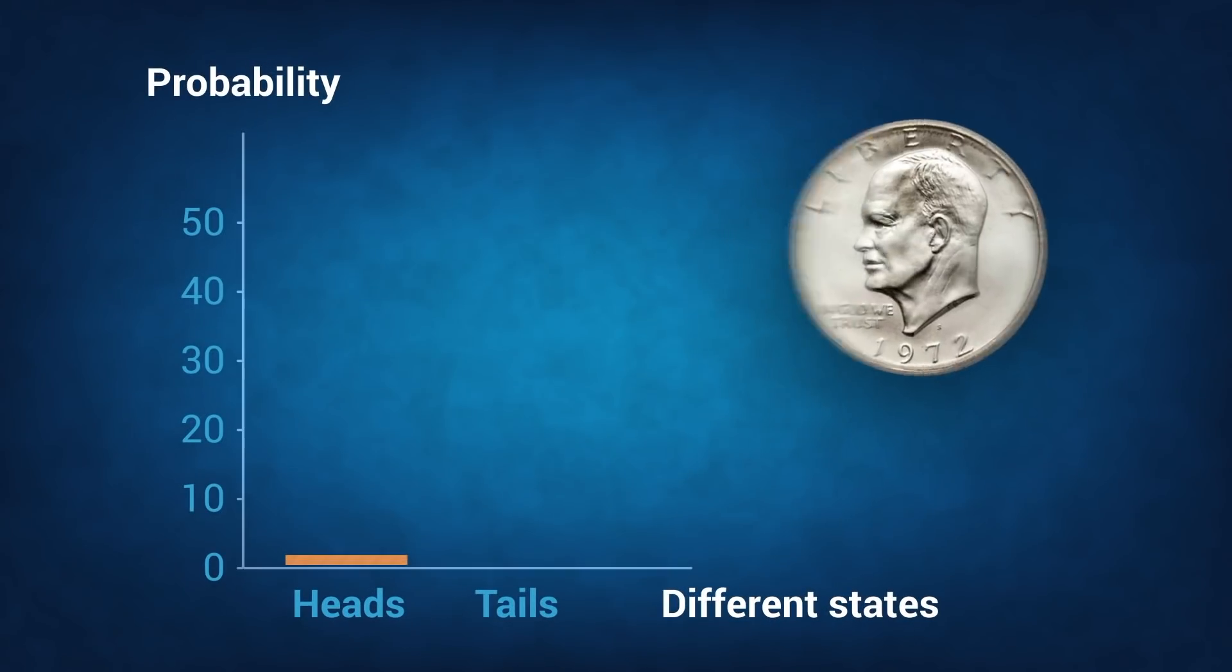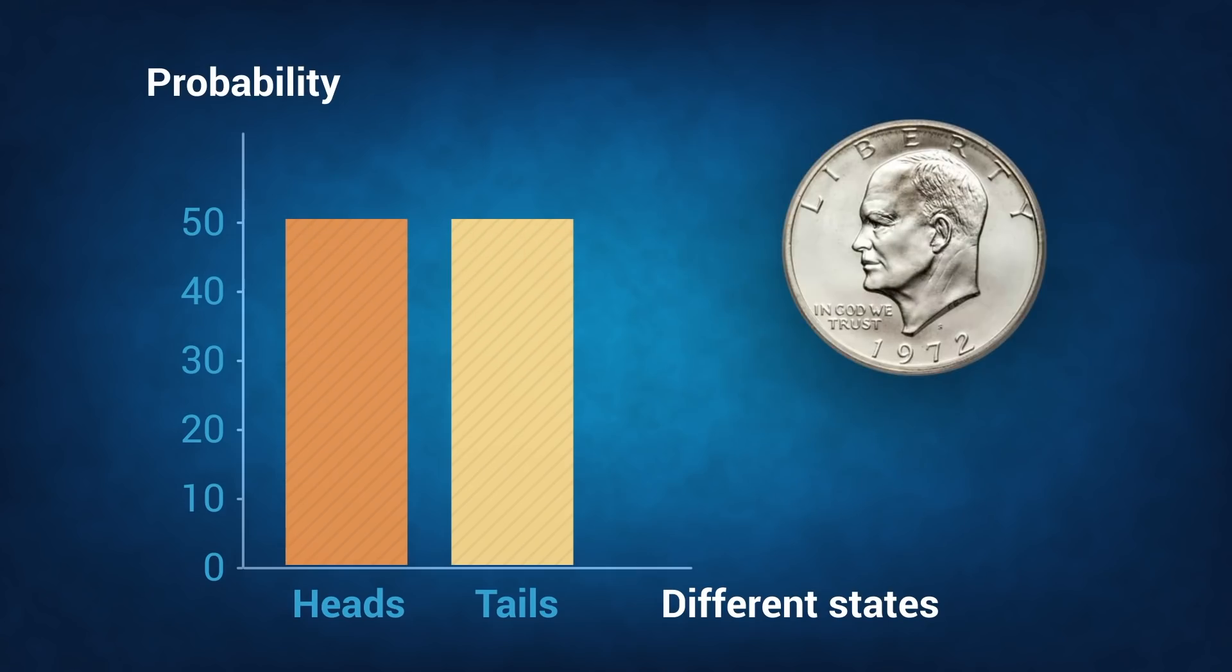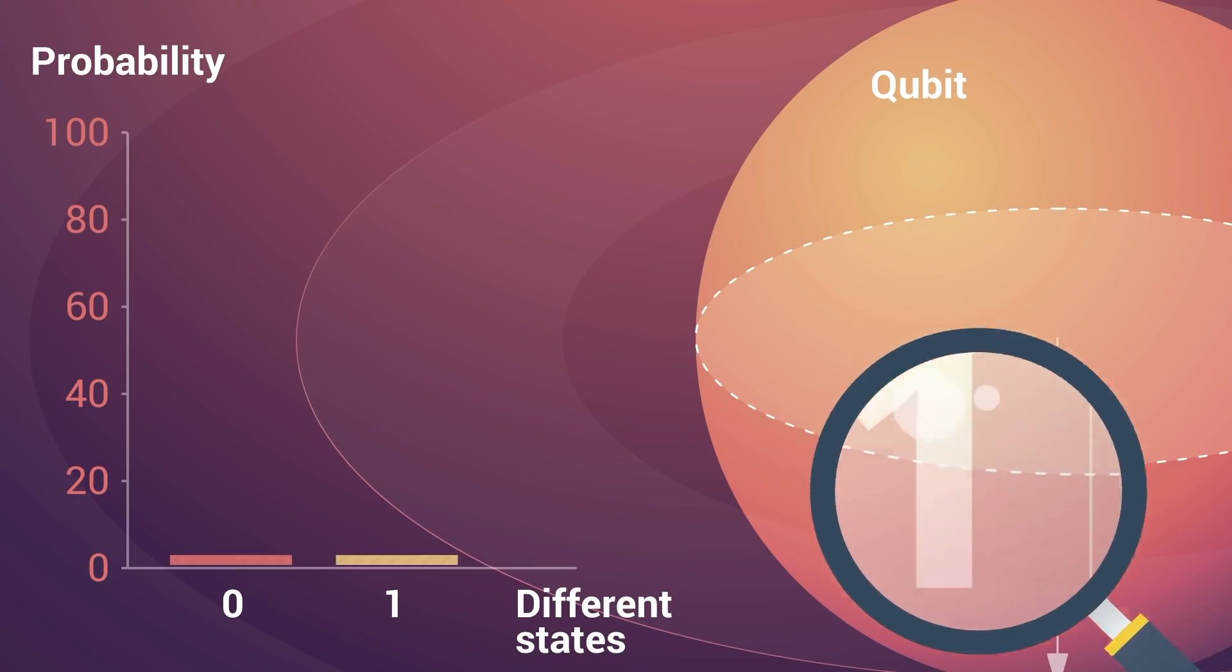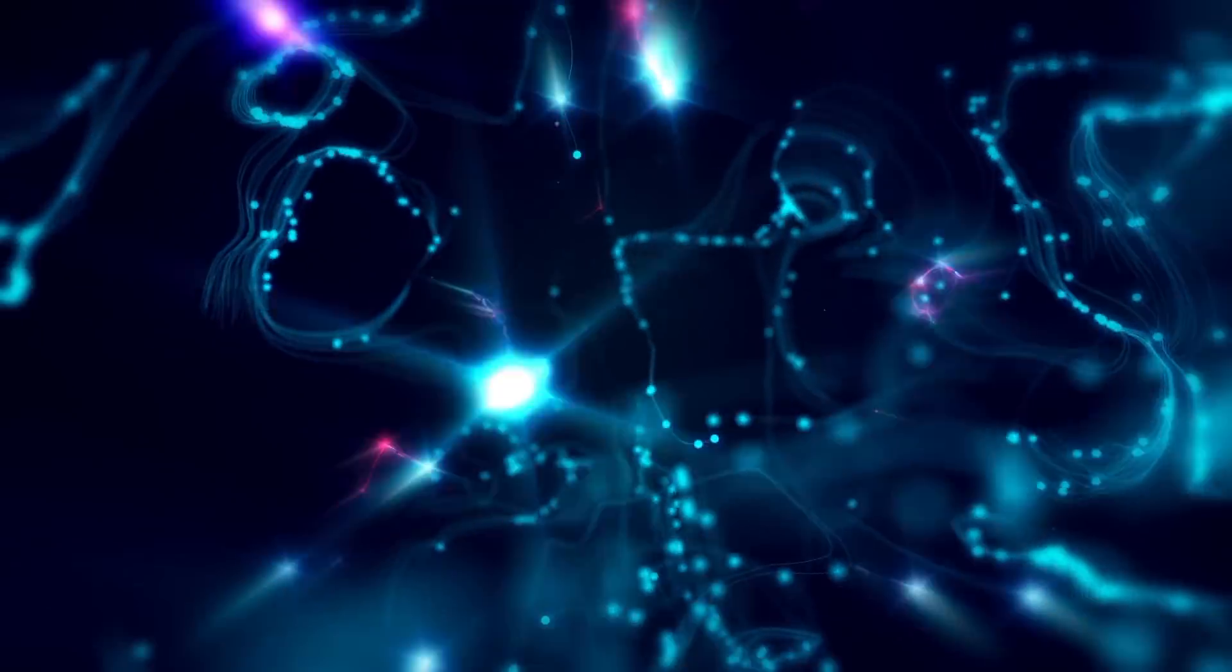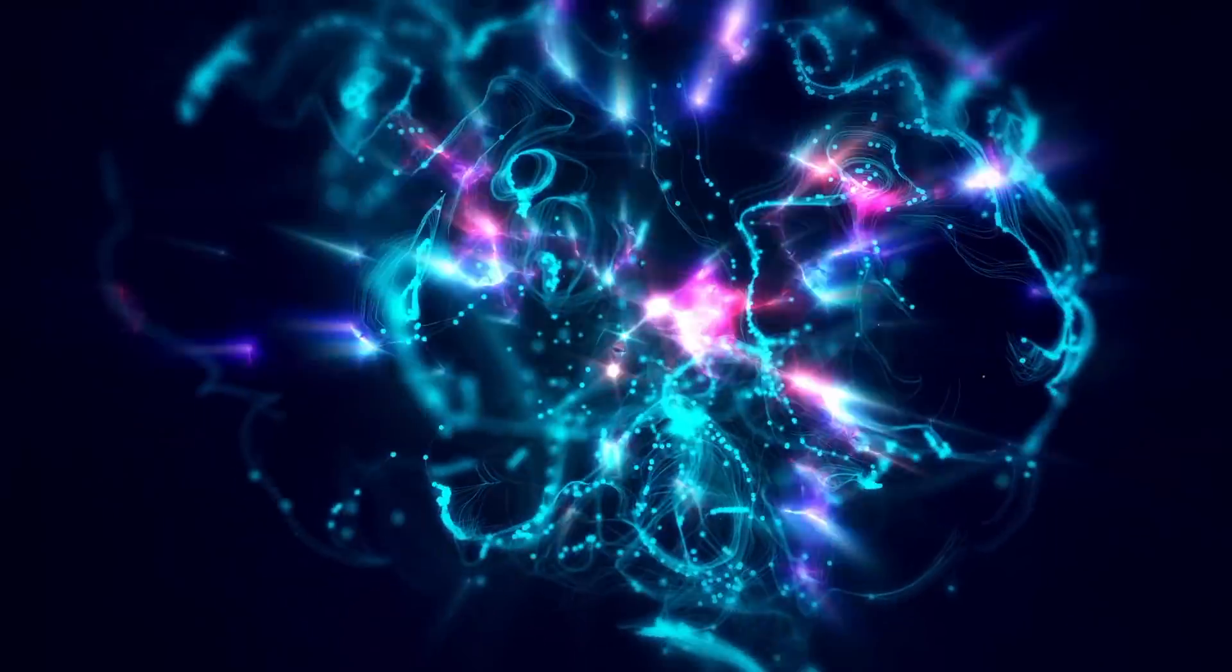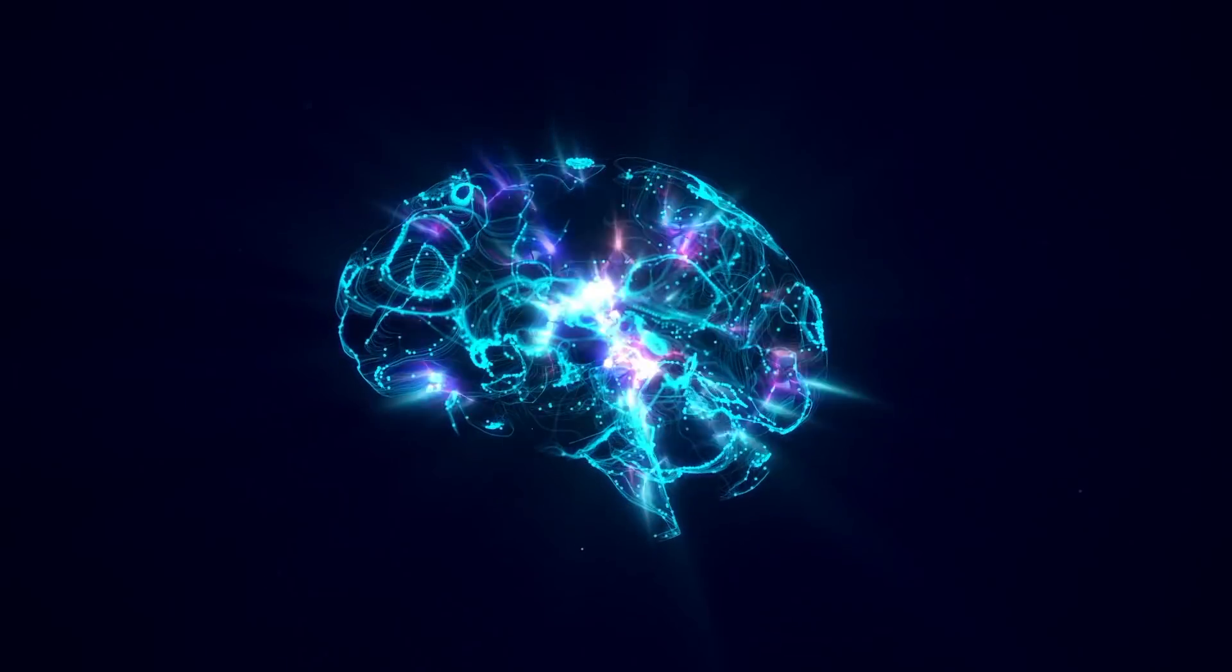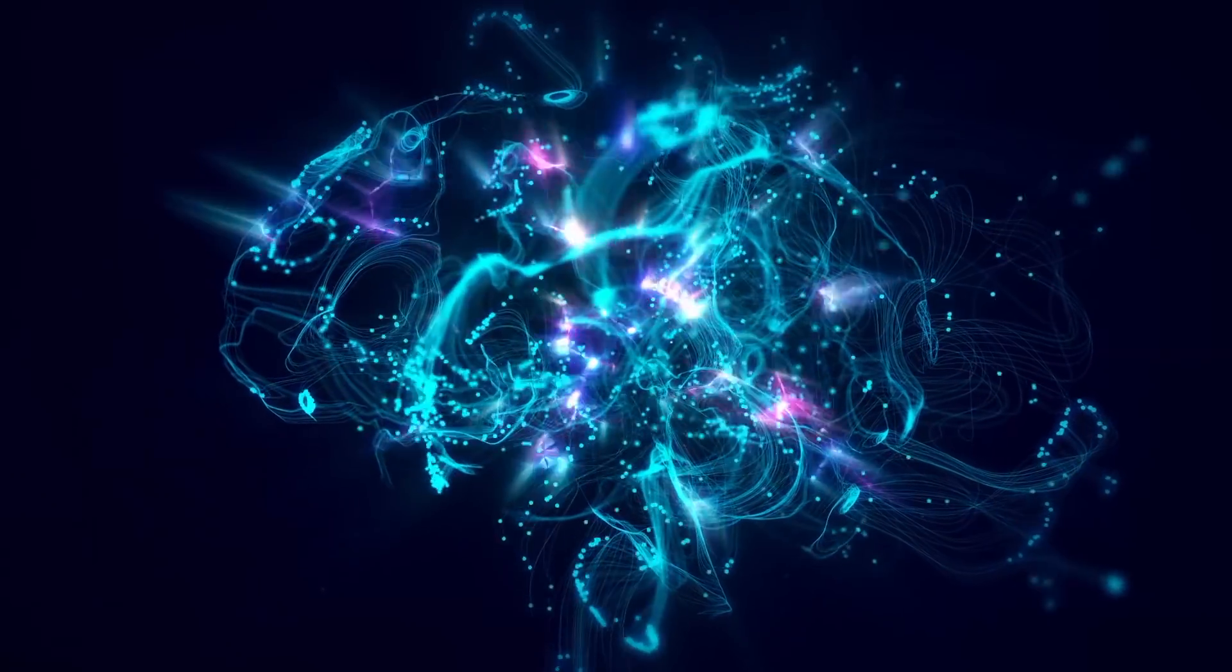Flip a coin enough times, and the probability of heads and tails will become clear. In the same way, repeatedly measuring a qubit will uncover the probability that it's in a particular position. Nature is also quantum. Our brains and the drugs we're searching for work in probabilities, so they can only be accurately simulated on quantum computers.